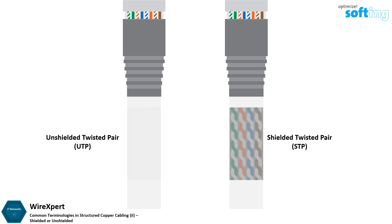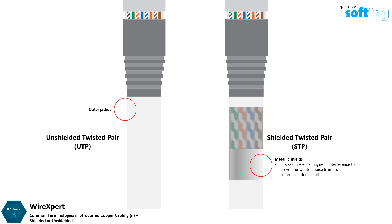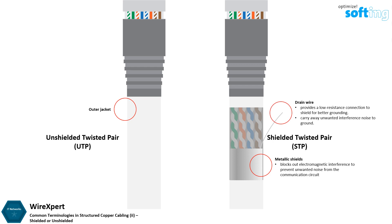The UTP cable is typically covered with just a plastic outer jacket and does not require grounding. The STP cable additionally has an overall conducting metallic shield covering the four twisted pair wires. These metallic shields block out electromagnetic interference to prevent unwanted noise from the communication circuit. Drain wires may also be present in STP cables for grounding purposes, providing a low resistance connection to the shield for better grounding.